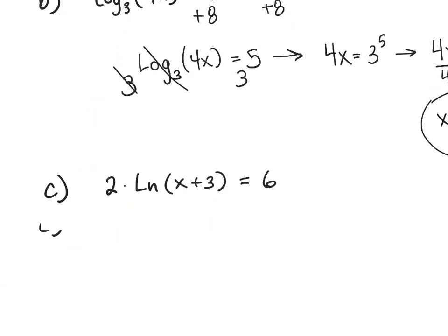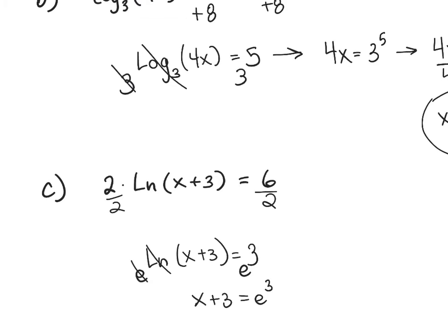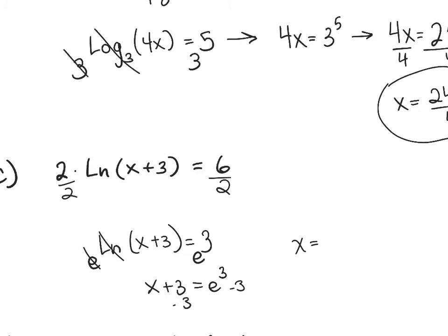Part C: There is a coefficient of 2 in front of the natural logarithm. Divide by 2 first to isolate the logarithm, then use base e on both sides to cancel the natural log, leaving x + 3 = e³. Subtract 3: x = e³ − 3, the exact form. The decimal approximation is about 17.1.